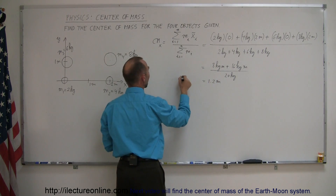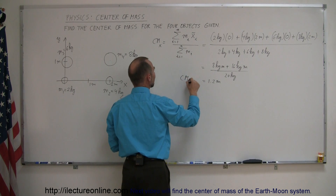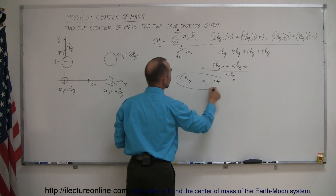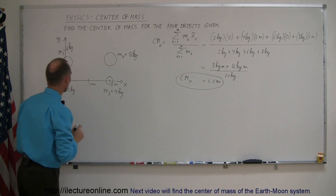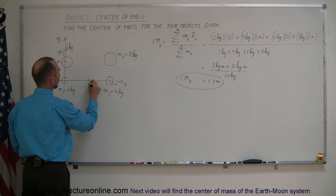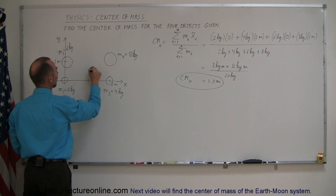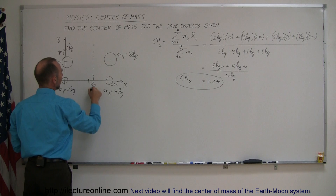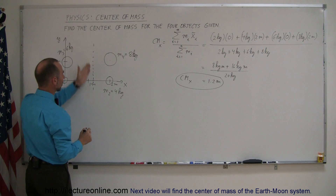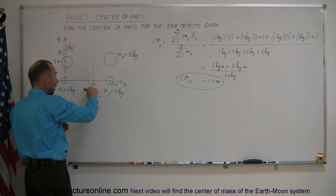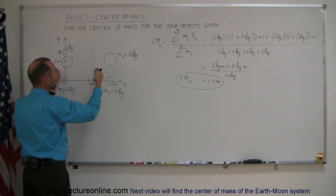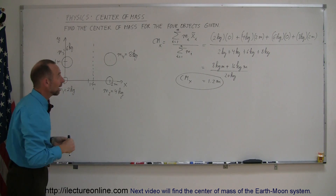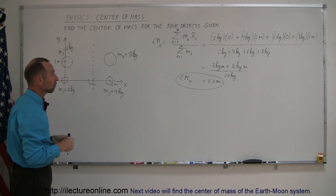So the center of mass in the x-direction is 1.2 meters to the right of the origin. This is 1 meter, this is 1.2 meters, so it would be right around here somewhere. The center of mass would be somewhere along this vertical line; we just don't know how high it is in the y-direction — that will depend upon finding the center of mass in the y-direction.